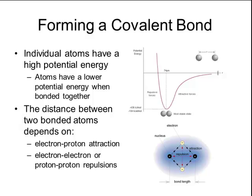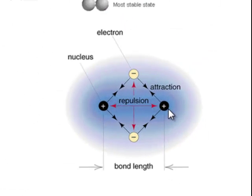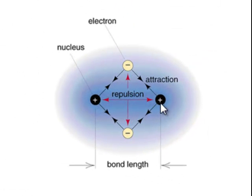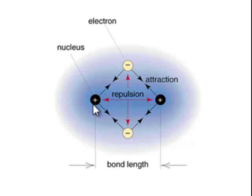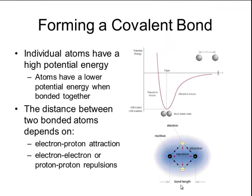If you look at a compound with two atoms in it, the nucleus of one atom is represented in black on the right and the other atom is represented in black on the left. There is a repulsion between those two sets of protons and also a repulsion between their electrons. But the protons of one atom are attracted to the electrons of the neighboring atom. The combination of those factors determines the bond length of the covalent bond.